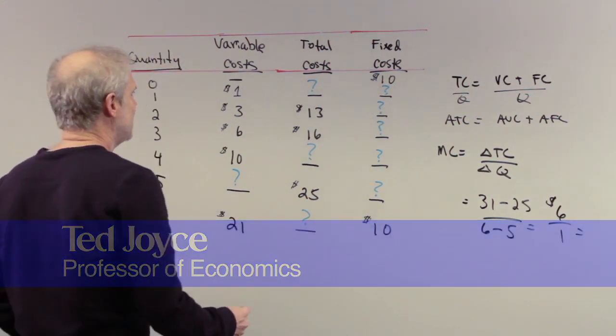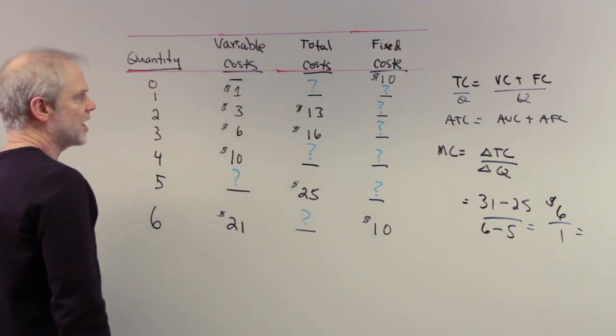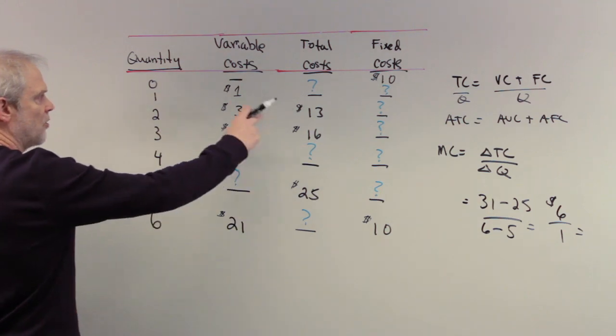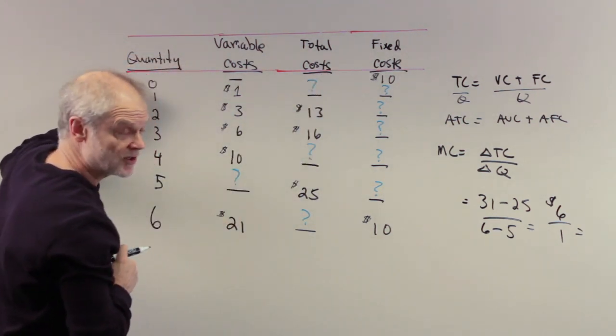So what's the change? I have the marginal cost, the change in total cost given a change in Q. Well, total costs do what? When you produce zero posters, your total costs are $10. Make sure you see that. Why?